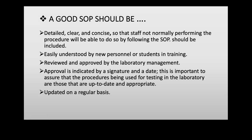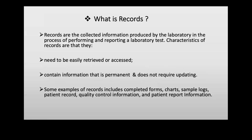Regular updates to SOPs are very essential. Records are collected information produced by the laboratory in the process of performing and reporting on laboratory tests. Characteristics of records: they need to be easily retrieved or accessed, contain information that is permanent, and do not require updating. Examples of records include forms completed in the laboratory, the sample log, patient records, QC data from the machine, and patient reports. Documents are the communicators of your quality system.